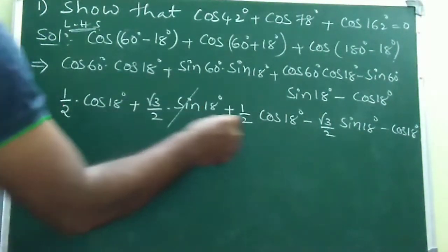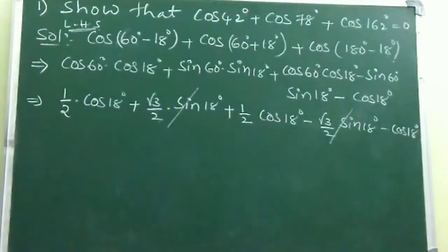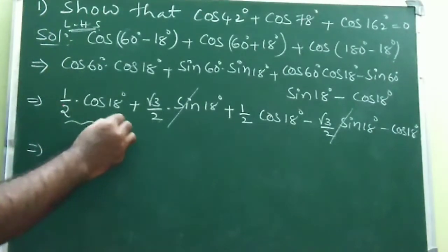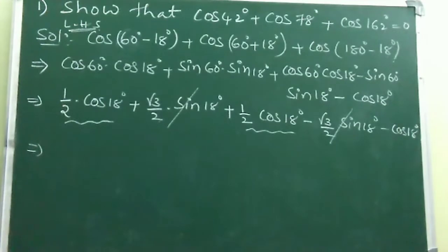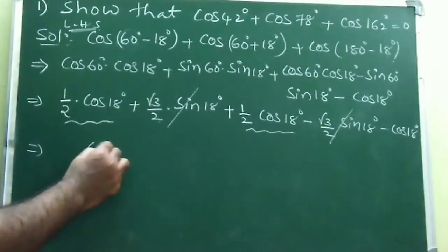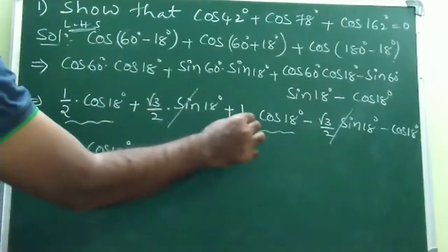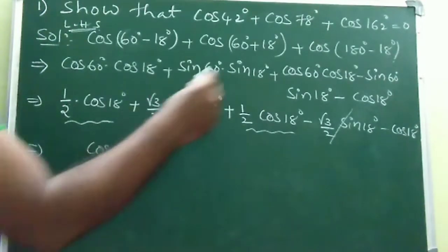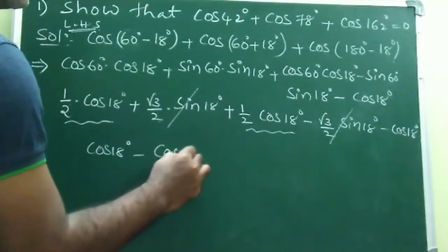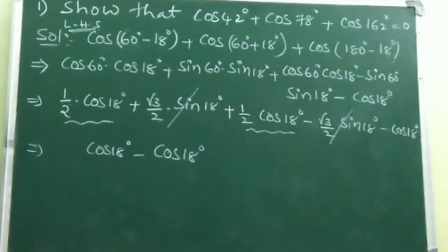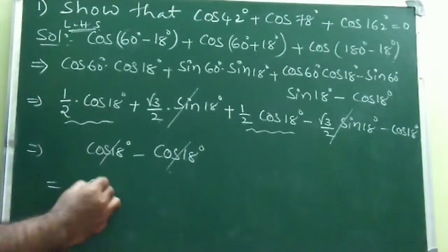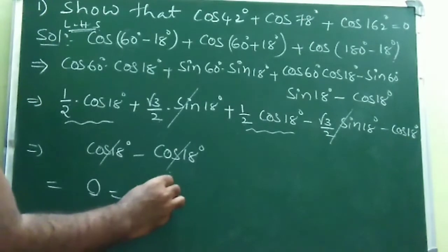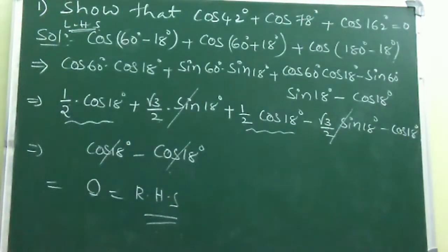We are left with (1/2)cos 18° + (1/2)cos 18°, which equals cos 18°. There is also the last term, minus cos 18°. So cos 18° - cos 18° = 0, which equals the right-hand side. Hence proved.